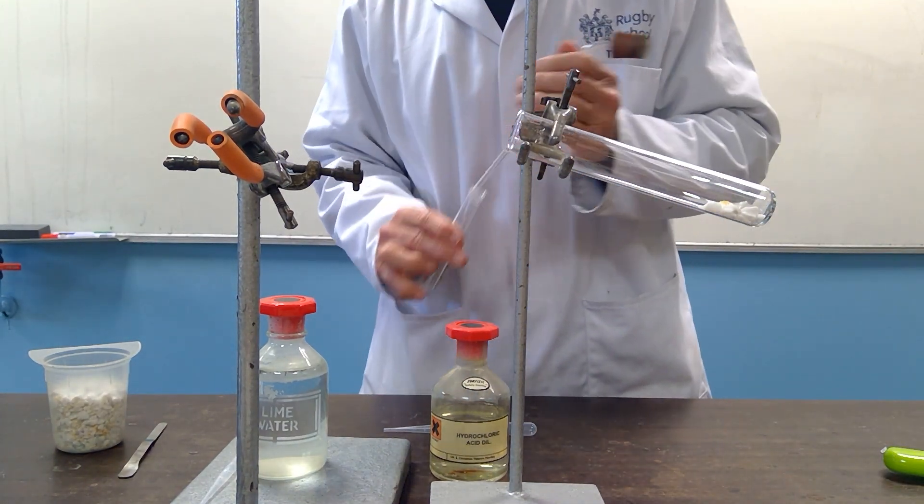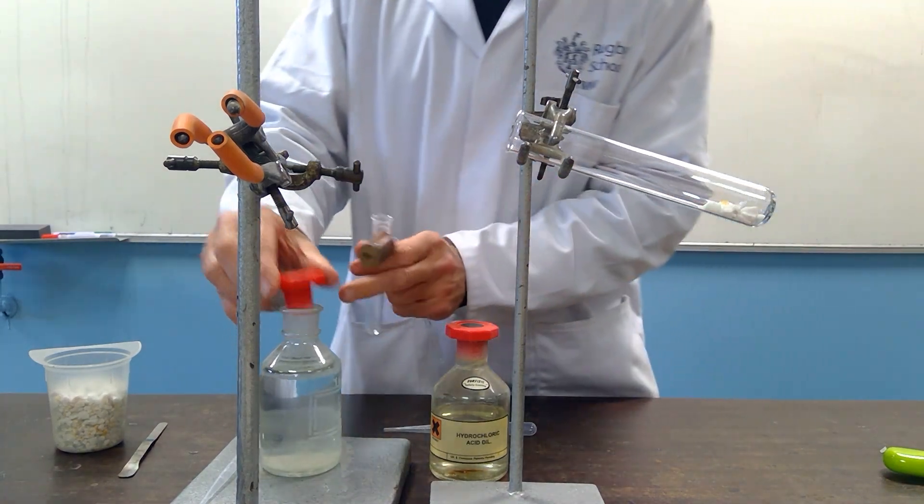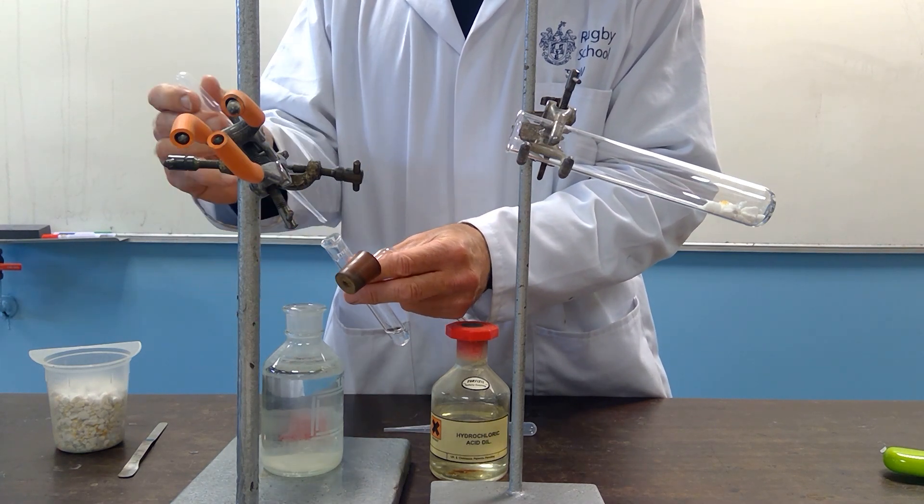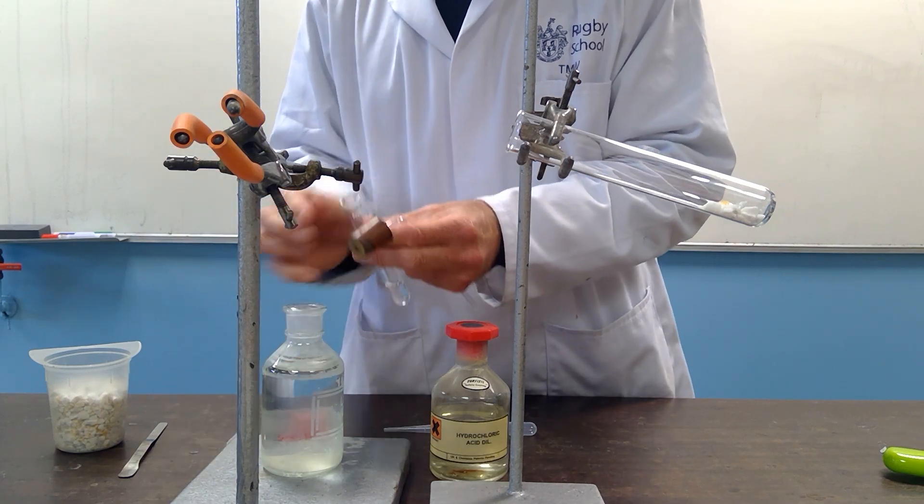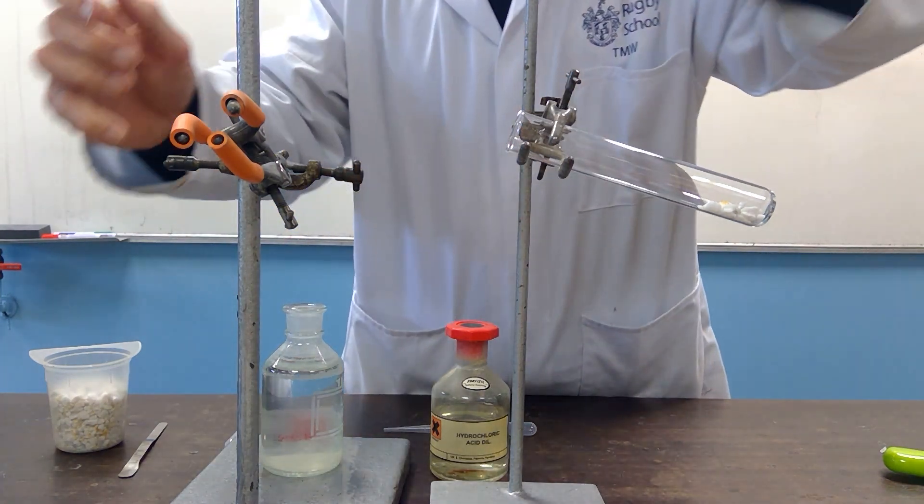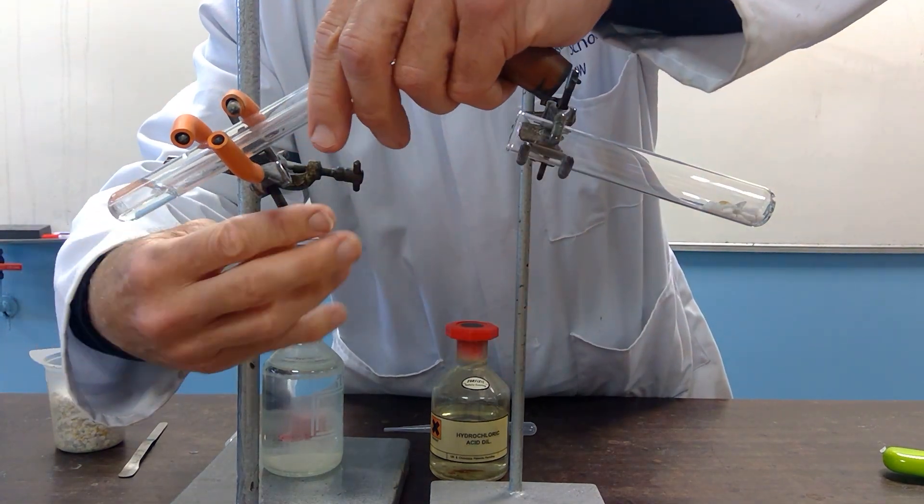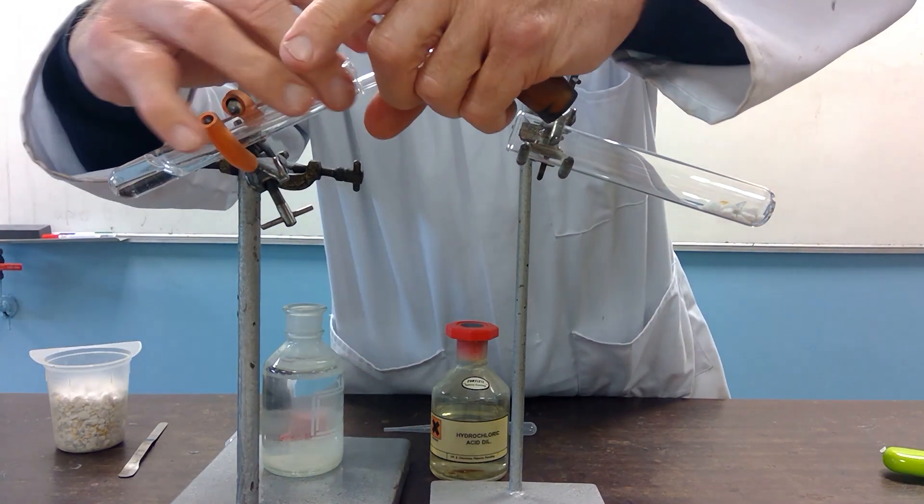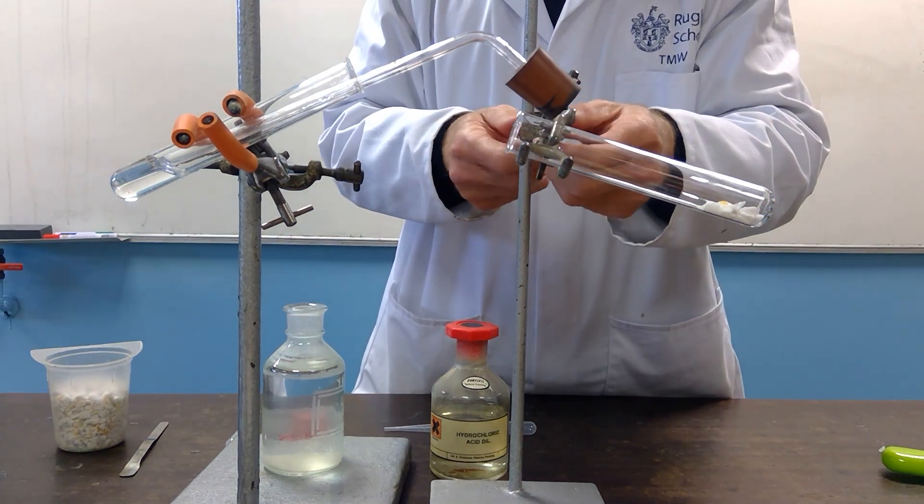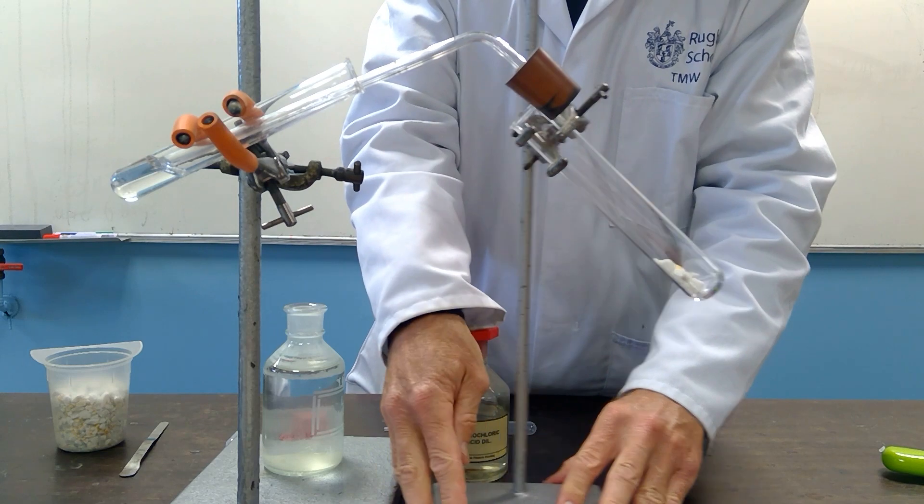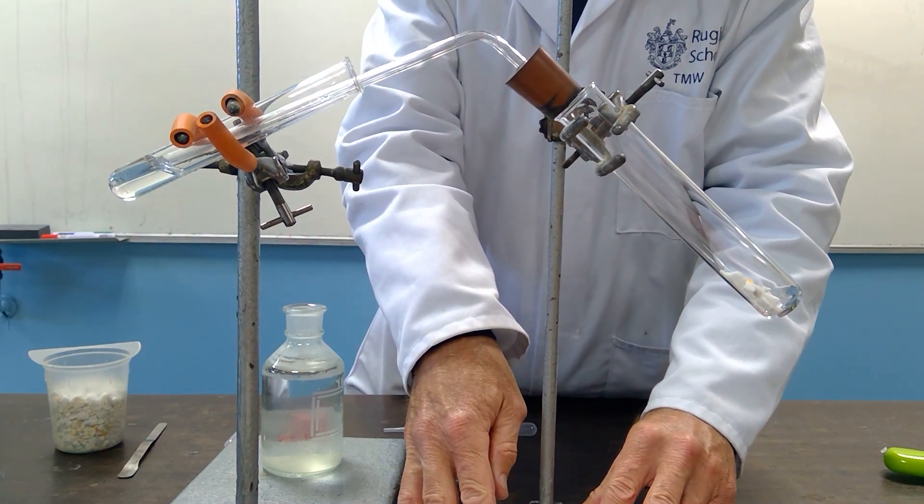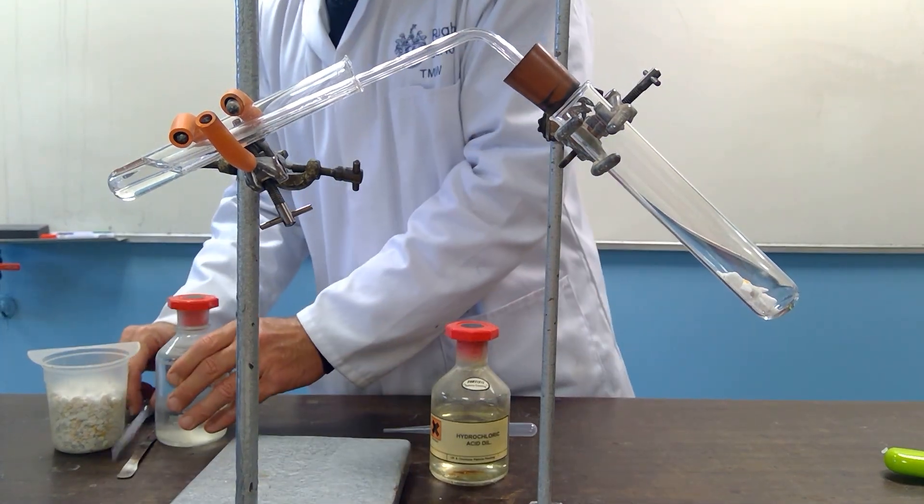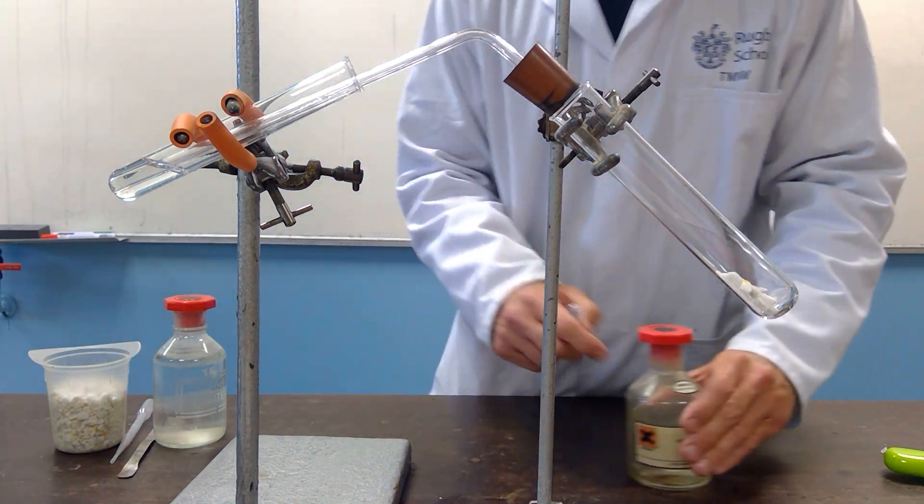So, if I once again set up with some of the lime water in the additional tube, this will be a way of proving and testing that we have carbon dioxide. And then we will be able to, as soon as the reaction starts and I add the acid, see if any of the carbon dioxide is given off.